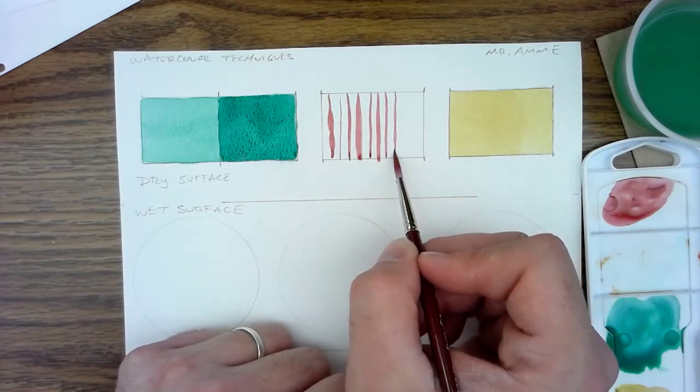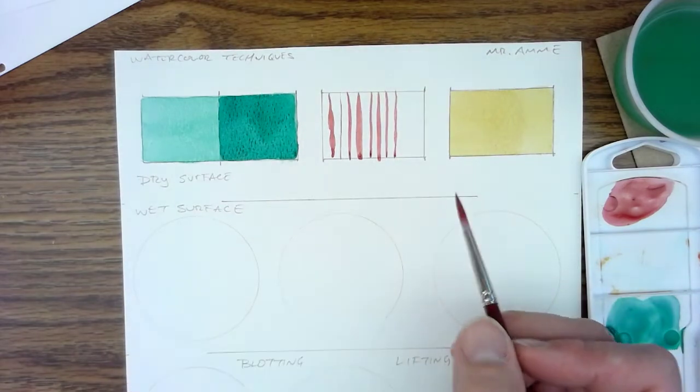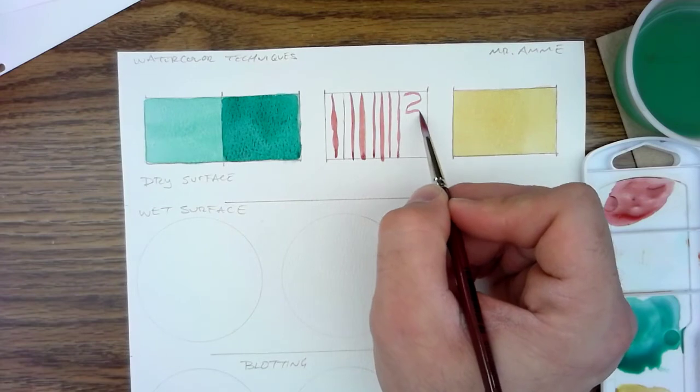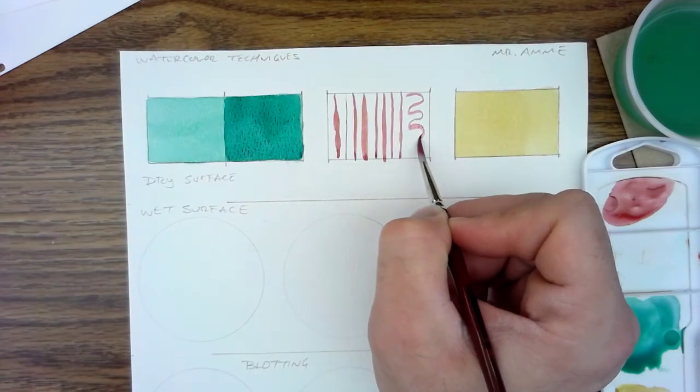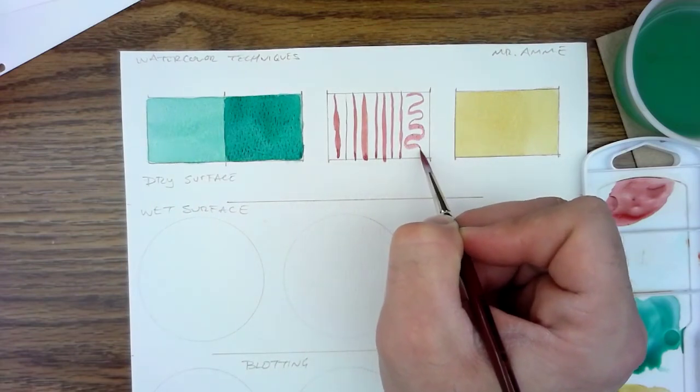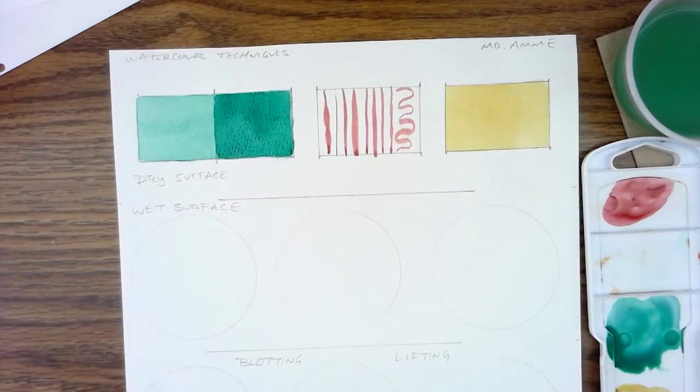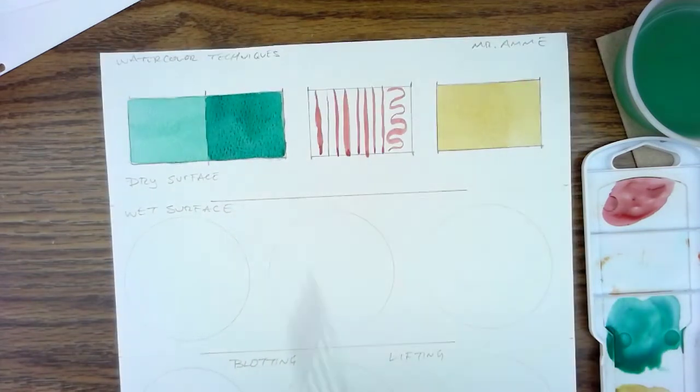Add pressure, lift, add pressure. You can see how you can vary the line weight of the form. Whether I'm doing curved lines or straight lines, adding and subtracting brush pressure will give you a different look.